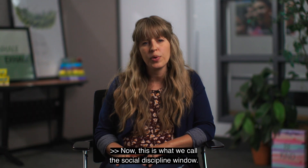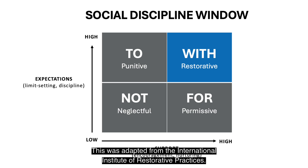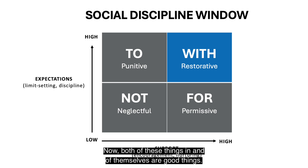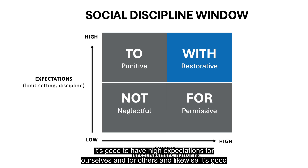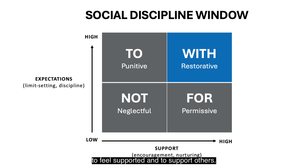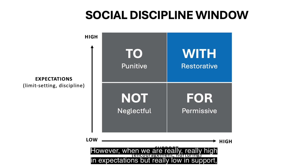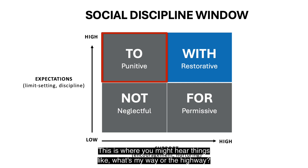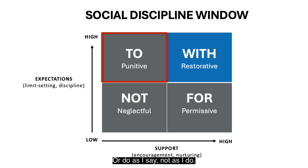This is what we call the social discipline window, adapted from the International Institute of Restorative Practices. On one axis you have expectations and on the other you have support — both good things in themselves. However, when you're high in expectations but low in support, that's punitive — doing things to people. You might hear things like 'my way or the highway' or 'do as I say, not as I do.'